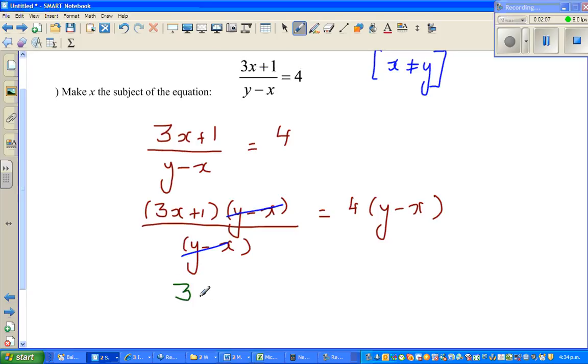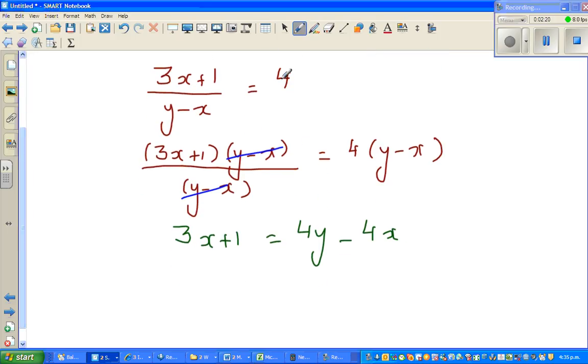Say 3x + 1 equals... now going to expand the bracket. So 4 times y is 4y minus 4 times x is 4x. Let me group the x's on one side. If I want to eliminate this -4x on the right hand side, I'm adding 4x to this side, so I also add 4x to this side.